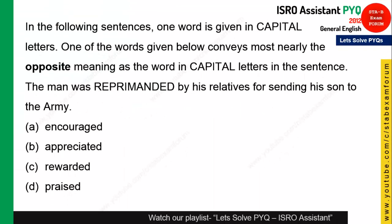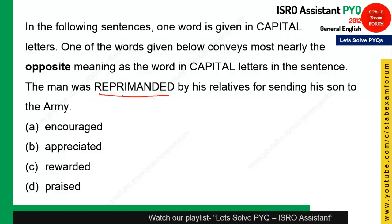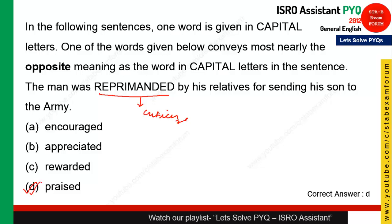The next question asks for the opposite meaning of 'reprimanded' in context. The statement is: 'The man was reprimanded by his relative for sending his son to the army.' Reprimanded is a negative word meaning criticized. The opposite of criticize is 'praise'. So option D is the right answer.